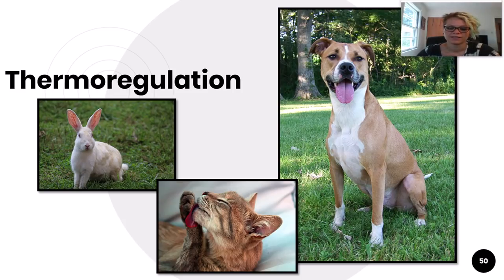Ectotherms rely on their environment to regulate their temperature. Ecto means outside. Reptiles and fish are both ectotherms.